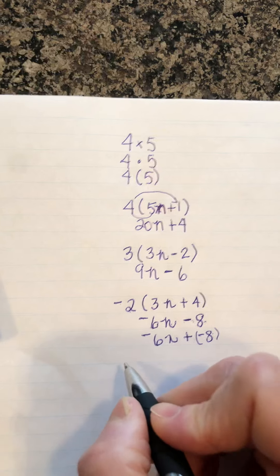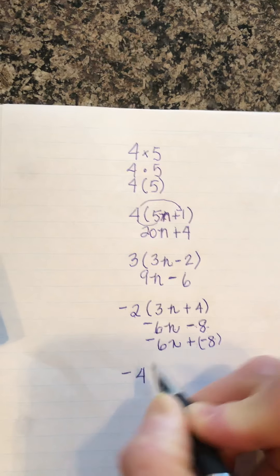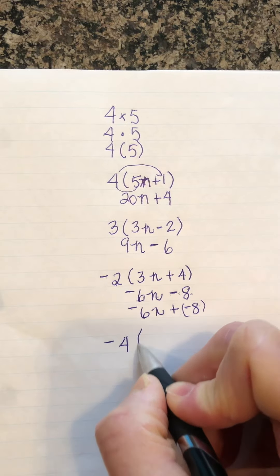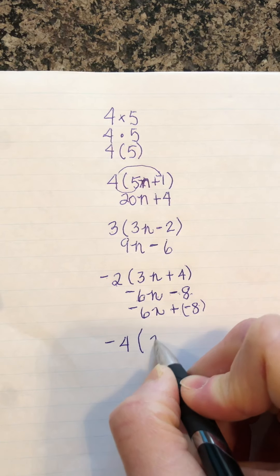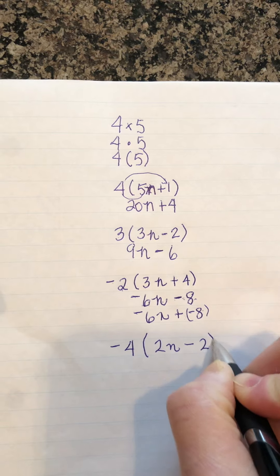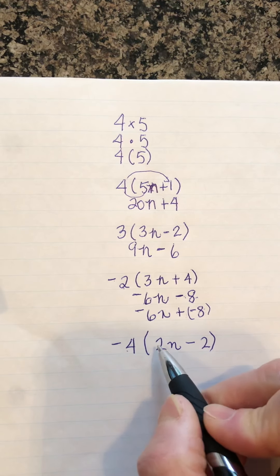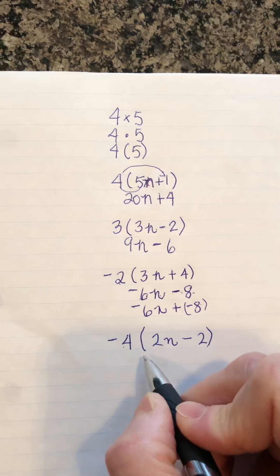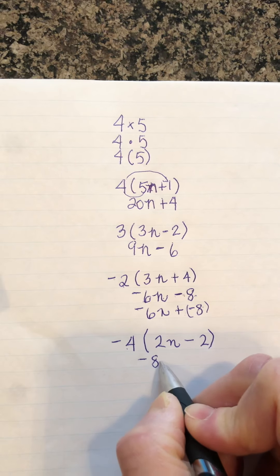I can do another one for you. So negative 4. Let's do this time with subtraction. So 2n minus 2. So it's going to be negative 4 times positive 2 is negative 8n.